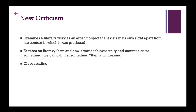The first type of criticism covered in chapter two is new criticism, also sometimes called formalist criticism — for our purposes we can think of them as the same thing. Basically, new criticism examines a literary work as an artistic object that exists in its own right, apart from the context in which it was produced. When you're doing new criticism, you ignore context and focus on the literary work as a self-contained whole. A professor once explained it like examining the mechanism that makes a watch work.